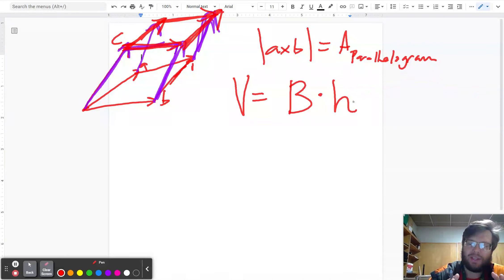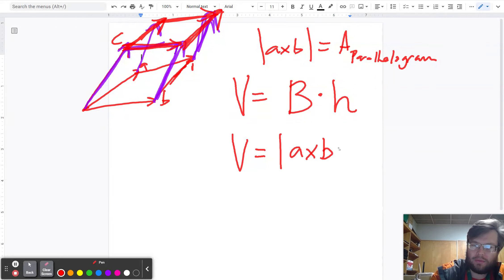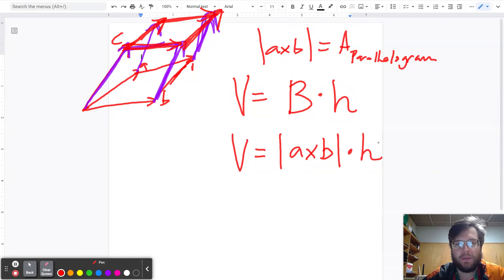And a crucial thing here is that the height must be perpendicular to the base. So the volume of our parallelopiped is the magnitude of A cross B multiplied by the height. Well, that's great, but we don't know exactly what the height is. So let's draw the height in there.